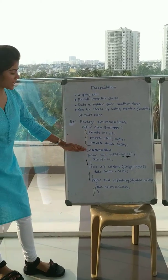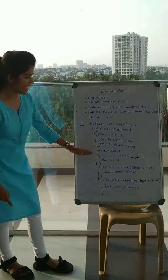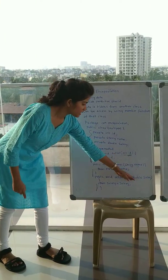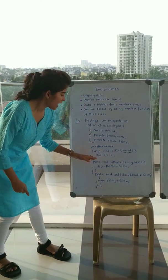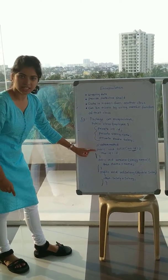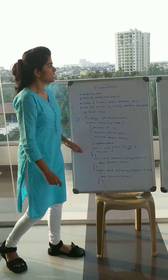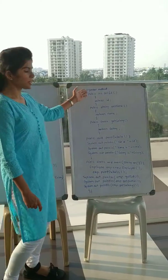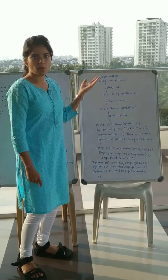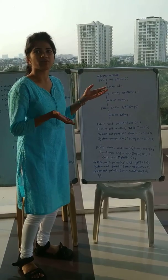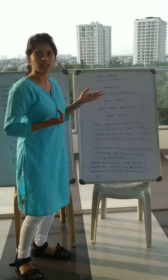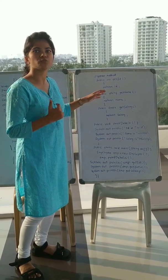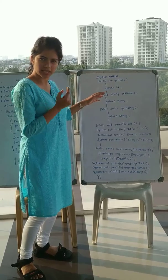Here for the getter method, I have taken int ID, String name, and double salary, and I have defined the method for that. I have taken the getter method to return the value so that we can get the output as the actual value which we are giving as the input.